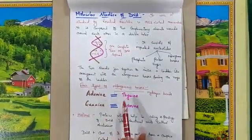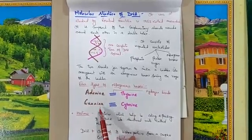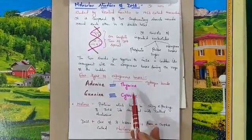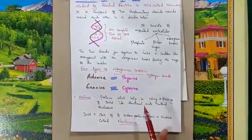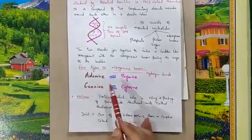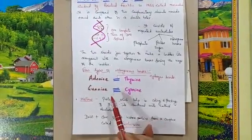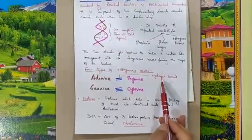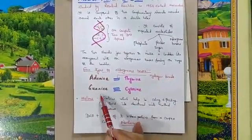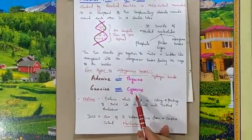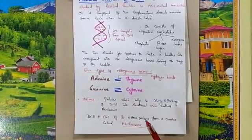The four types of nitrogenous bases are adenine, guanine, thymine, and cytosine. Adenine always combines with thymine with a double bond of hydrogen, and guanine with cytosine with a triple bond.